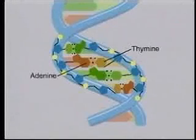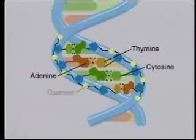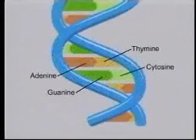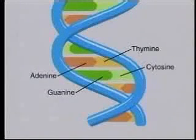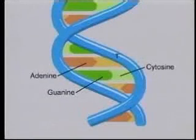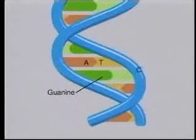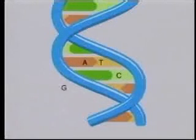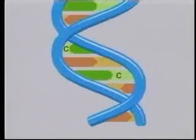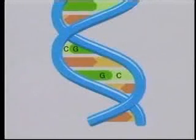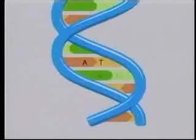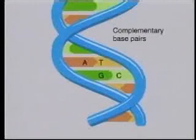The four bases are thymine, adenine, cytosine, and guanine. The names of the bases are often abbreviated: T stands for thymine, A for adenine, C for cytosine, and G for guanine. T always pairs with A, and C always pairs with G.